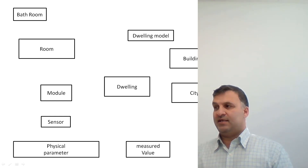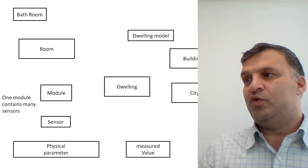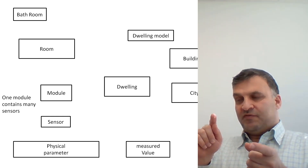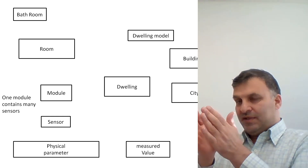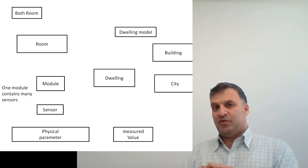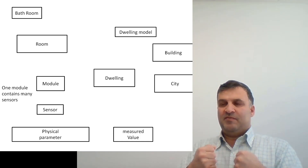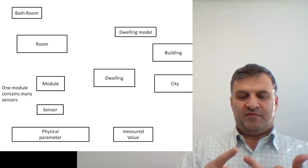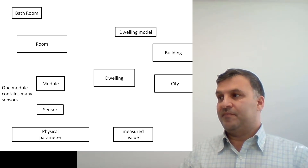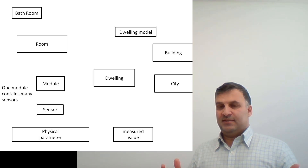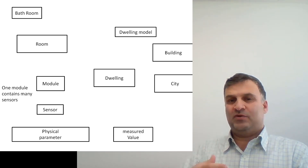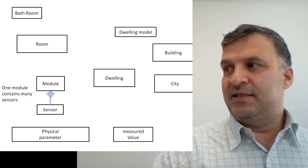Hope you realized the exercise. Now we will start with the first sentence: one module contains many sensors. We have a module and we have sensors, and we will convert from human language sentences to graphics. We should well understand the meaning. Our electronic module contains physically sensors — we cannot separate them from the module. So, considering whether the relationship is association, composition, aggregation, inheritance, or dependency — since the sensor is a part of the module and cannot be separated — the best solution is composition. Composition is a filled diamond.